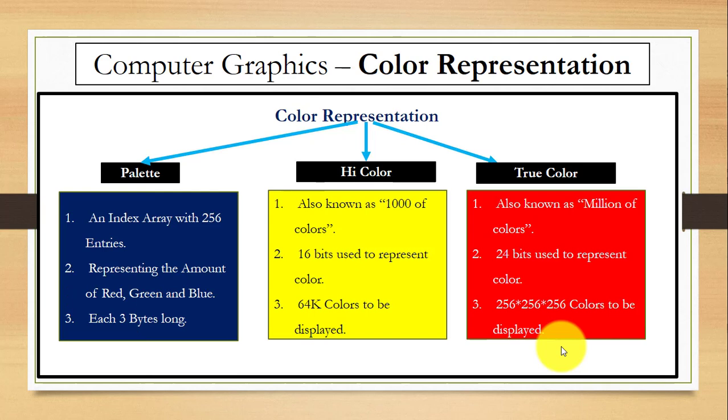Now, we have color representation. For color representation, we have three modes: high color, palette, and true color. In this, we have 256 entries representing the amount of color like red, green, blue. Each color is three bytes long. High color is also known as thousands of colors and true color as millions of colors.